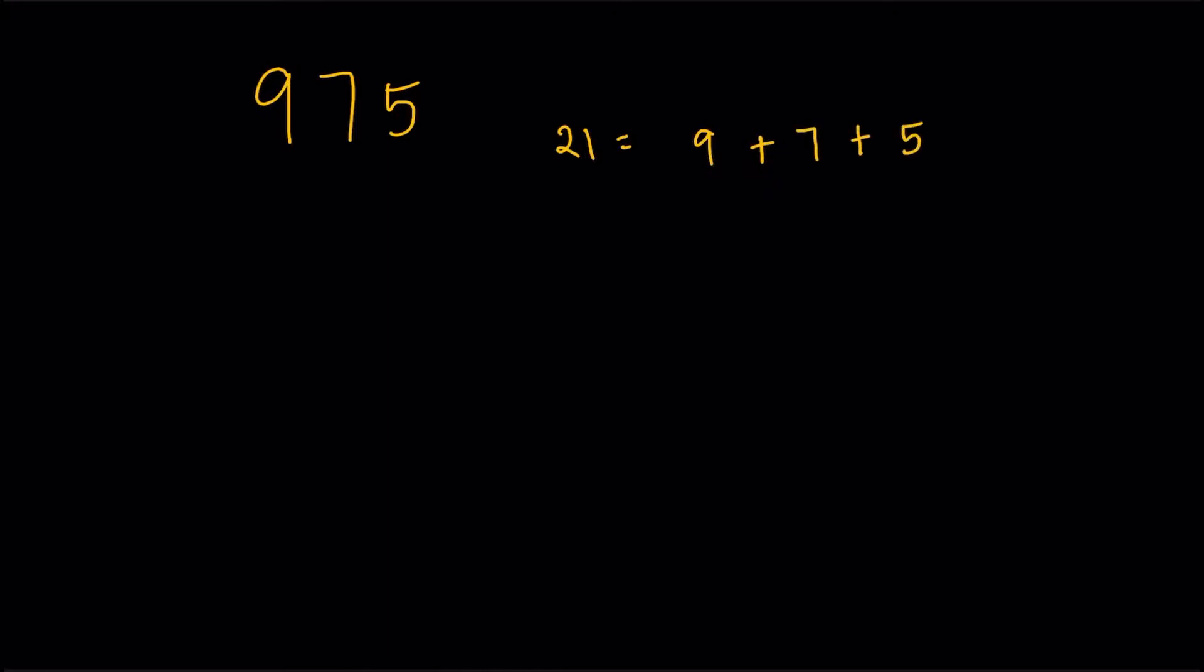Now, there is an interesting thing here because the digit sum is not really going to change even if I permute the digits. So for example, I could permute 975 and get 597. Same thing because I'm adding the same three numbers, 5, 9, and 7. So it's not really going to matter.